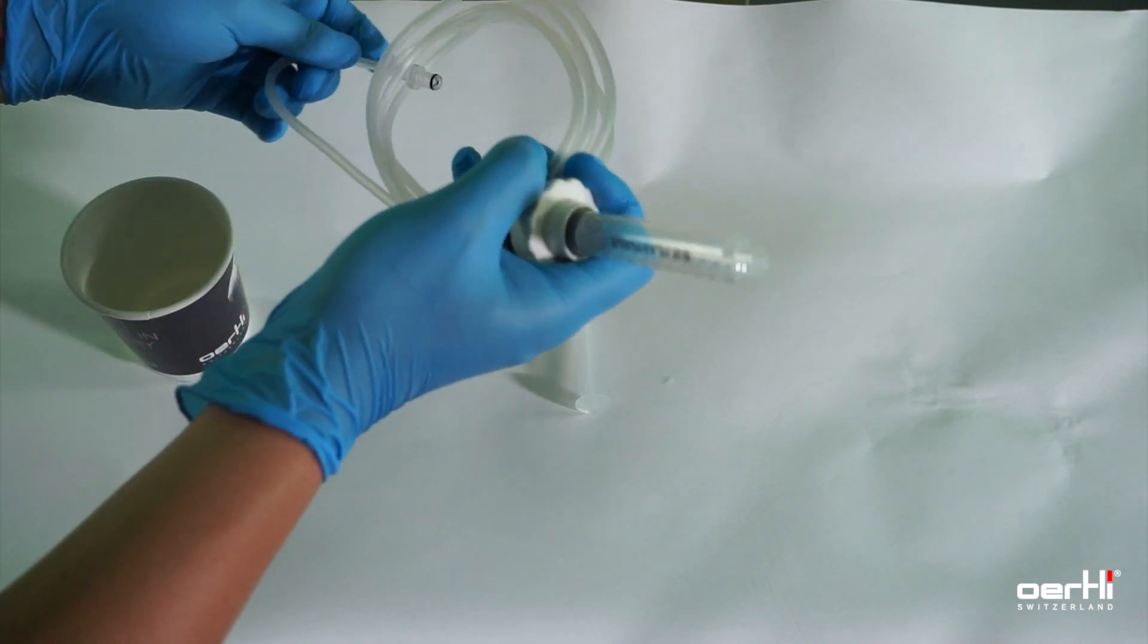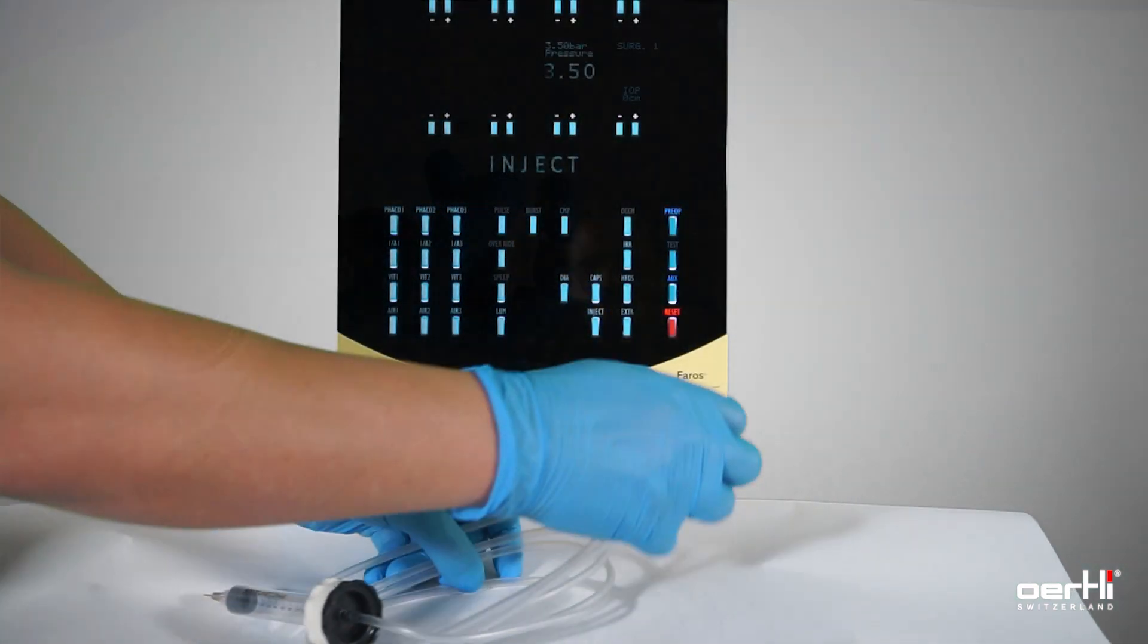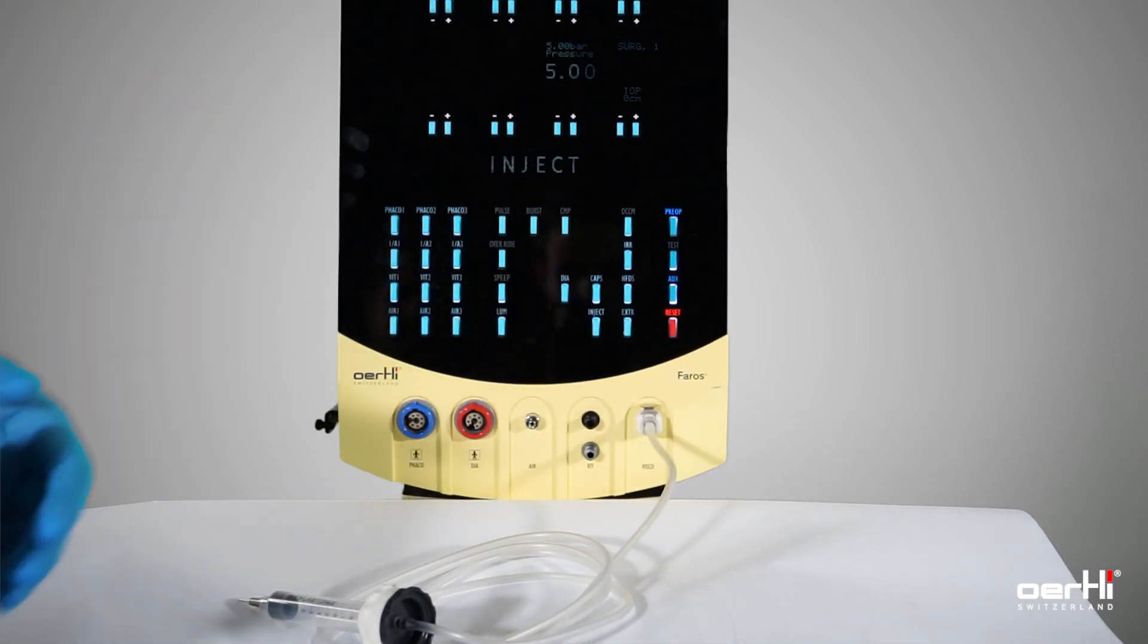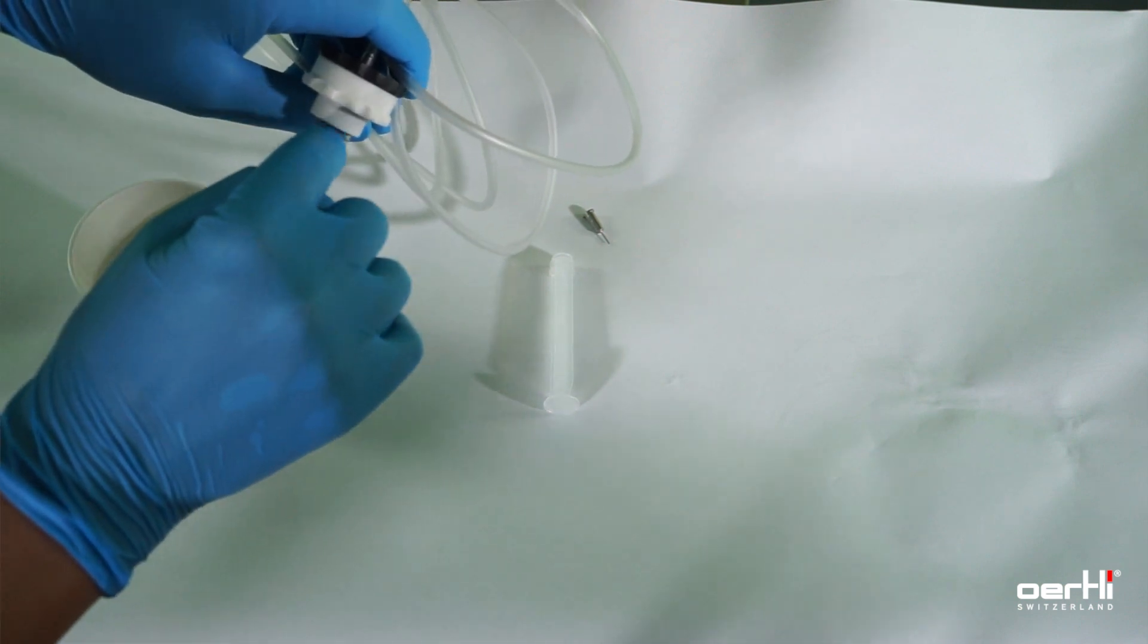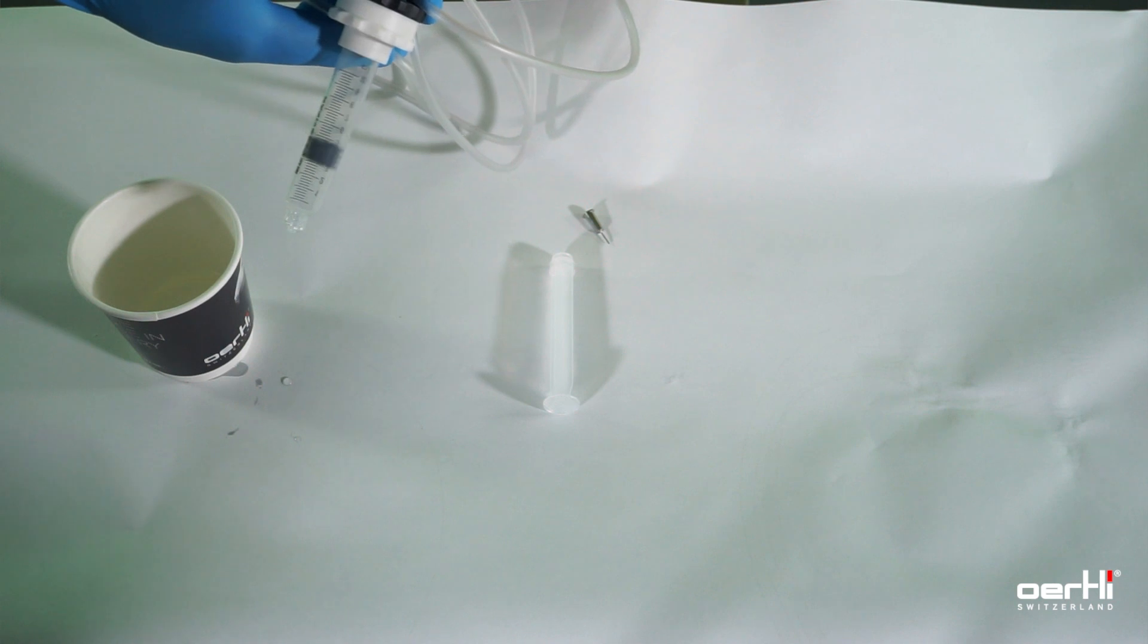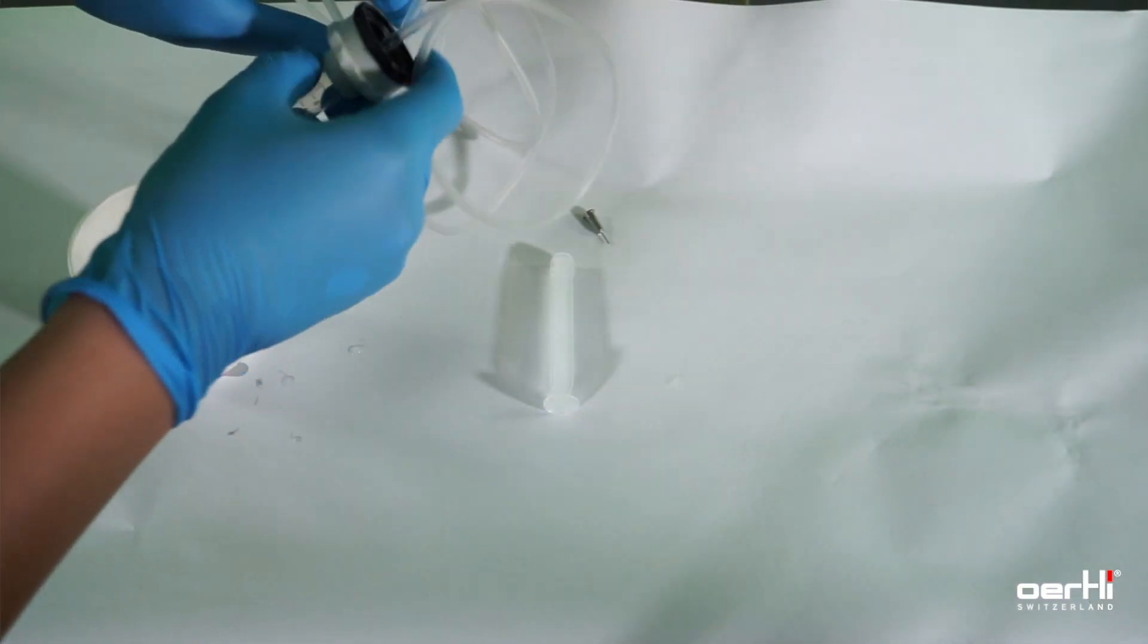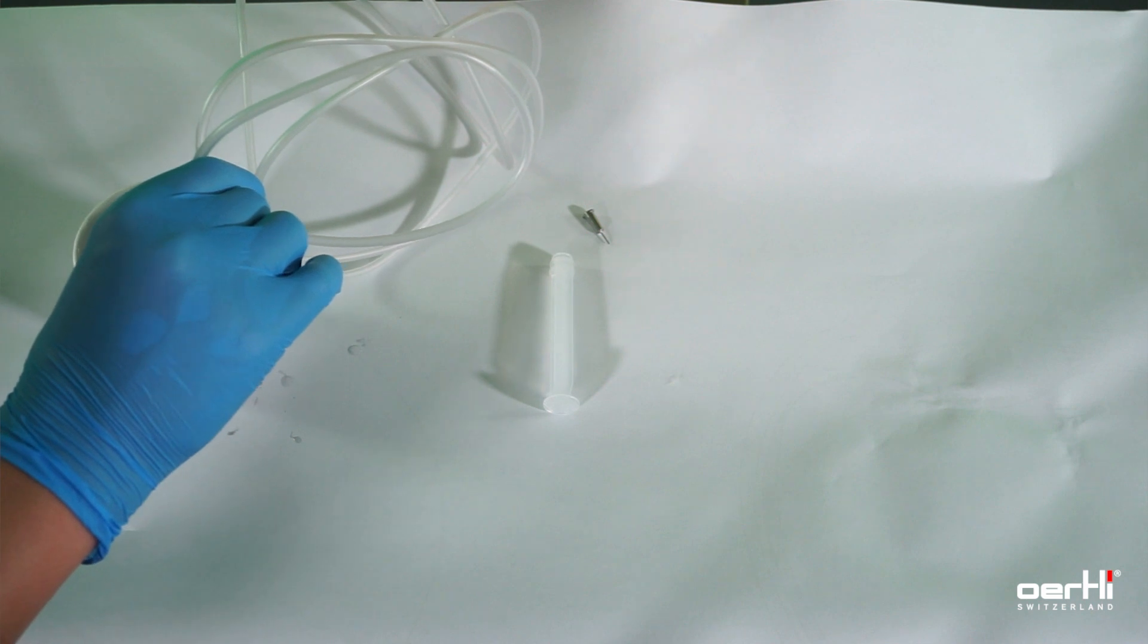To fill the syringe, now connect the syringe with your device. Go into injection function. Move the plunger stopper all the way down by using the paddle. Change into extraction function and use the paddle to fill the syringe now with silicon oil.